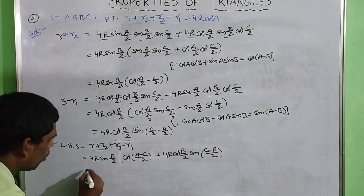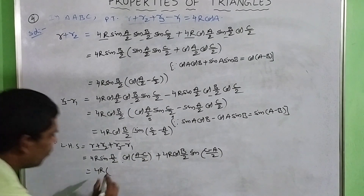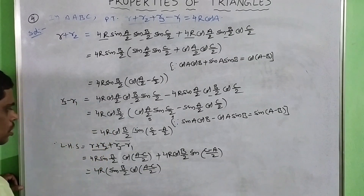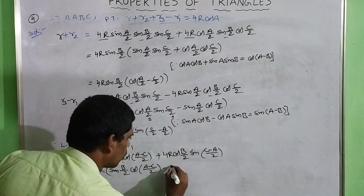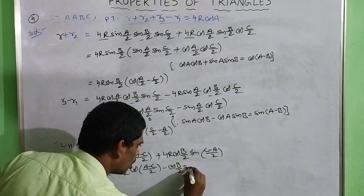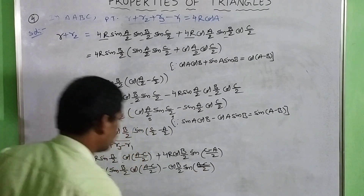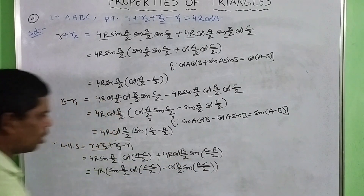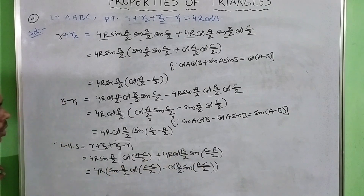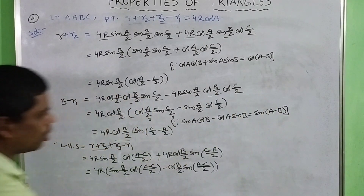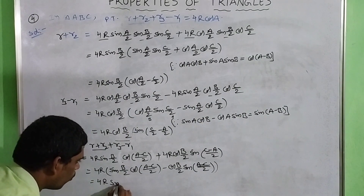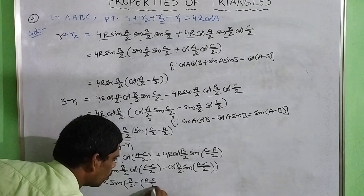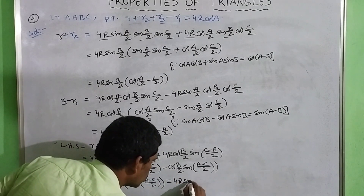Now combining: LHS = (r + R2) + (R3 − R1) = 4R sin(B/2) cos(A/2 − C/2) + 4R cos(B/2) sin(C/2 − A/2). Taking 4R common and applying sin A cos B − cos A sin B = sin(A − B), we get 4R sin(B/2 − (A/2 − C/2)) = 4R sin((B + C − A)/2).